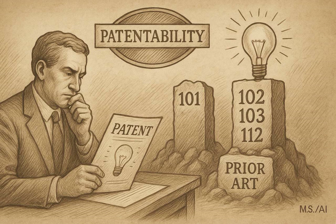That's a lot packed into Chapter 2100. To recap the big pillars: Section 101 subject matter eligibility, navigating those judicial exceptions with the Alice-Mayo test. Then utility — specific and substantial. Section 102 novelty — it has to be new compared to the prior art. Section 103 non-obviousness — it can't be just an obvious tweak on existing stuff, thinking about KSR. And Section 112 — adequate written description, enablement so others can make and use it, and definite claims that match what you invented. Understanding these patentability requirements is absolutely fundamental for anyone interacting with the U.S. patent system: inventors, attorneys, examiners, even business folks making decisions about IP.